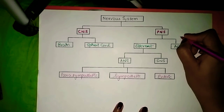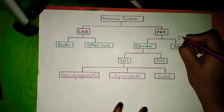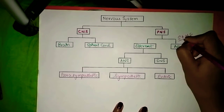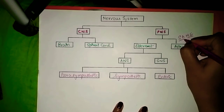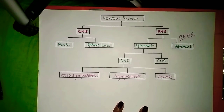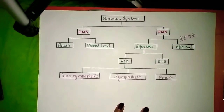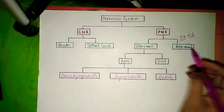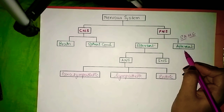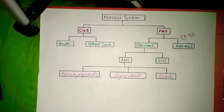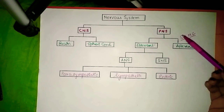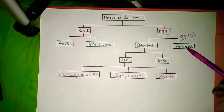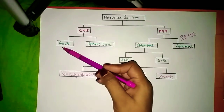You can remember this by the mnemonic SAME — Sensory is Afferent and Motor is Efferent. Afferent or sensory nerves detect various sensations such as pain and temperature, and they transmit signals towards the brain.